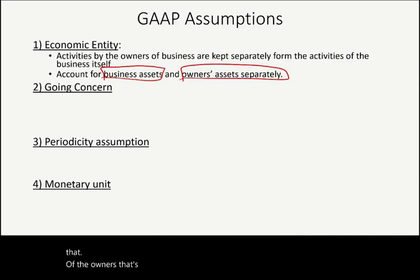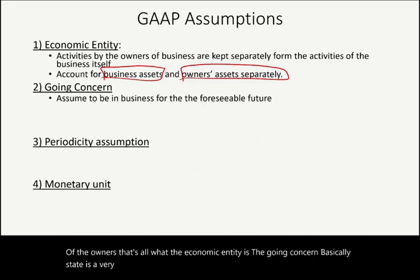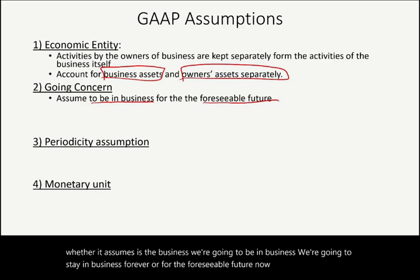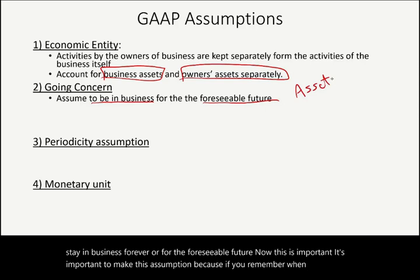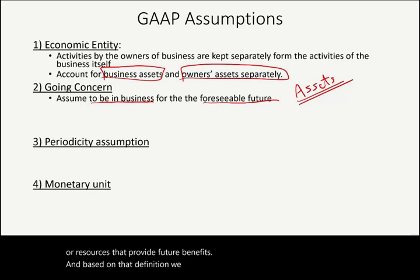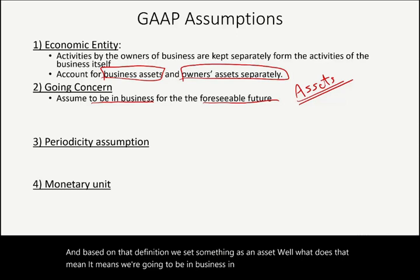The going concern assumption is very powerful. It basically states that the business is going to stay in business forever or for the foreseeable future. This is important because when we defined an asset, we said assets are resources that provide future benefits. That definition implies we're going to be in business in the foreseeable future — that's an assumption we make when we do accounting.